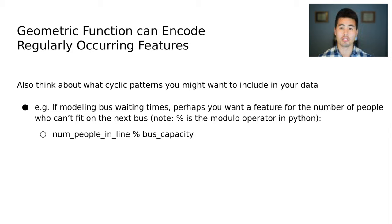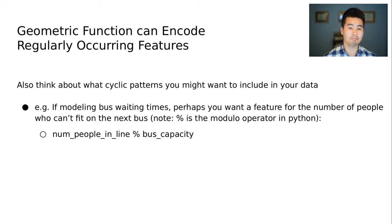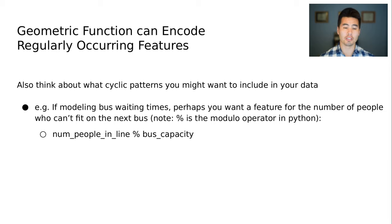In addition to the basic numeric operators of addition, subtraction, multiplication, and division, you can think about other mathematical functions — especially geometric functions — being really important for creating patterns within your data. For example, the modulus operator could be really handy. For bus queue times, if you're thinking of how long a person might wait in line, you might take the modulo of the number of people in line with respect to the size of the bus or taxi that's coming.